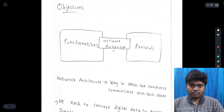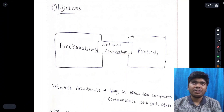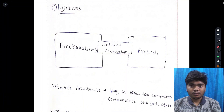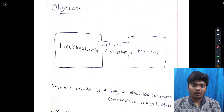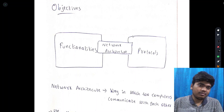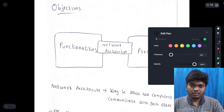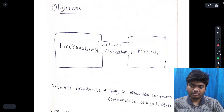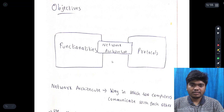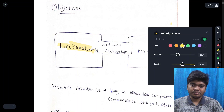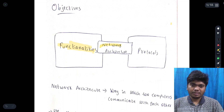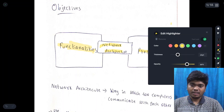Computer networks and security requires a prerequisite of operating systems and design, so we need to have some basic knowledge in that subject. Now, looking at the basic objectives of this particular course on computer networks: network architecture, protocols, and functionalities.